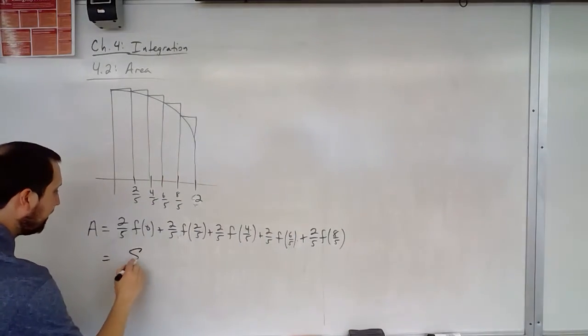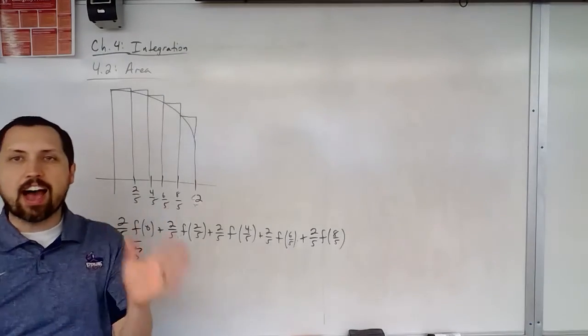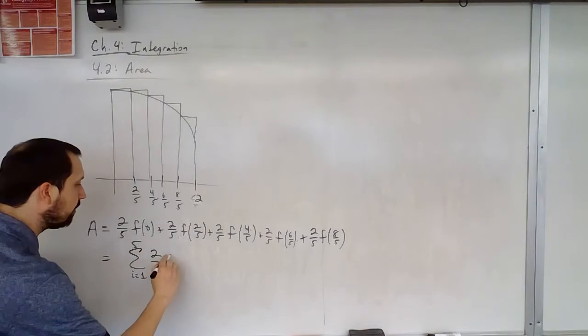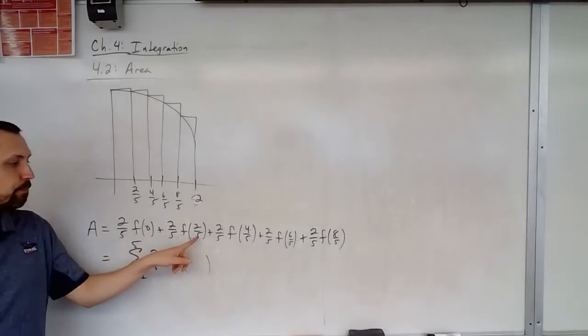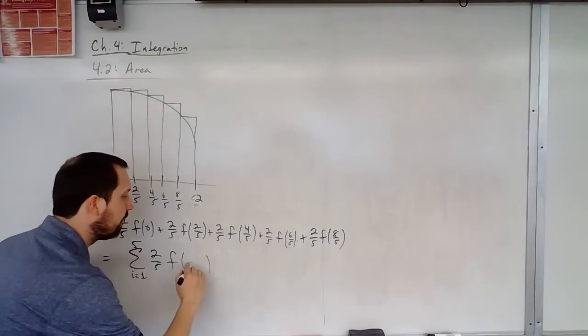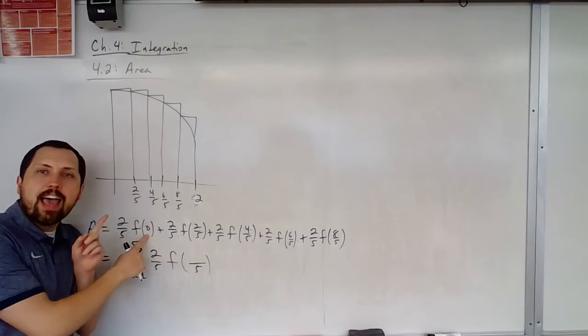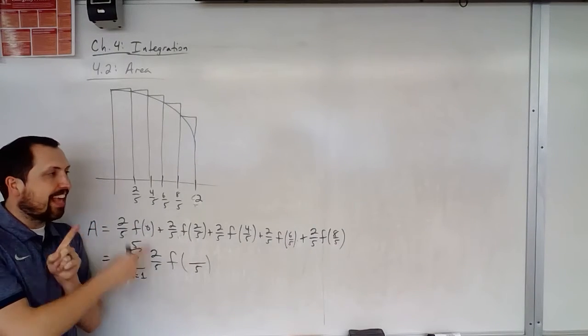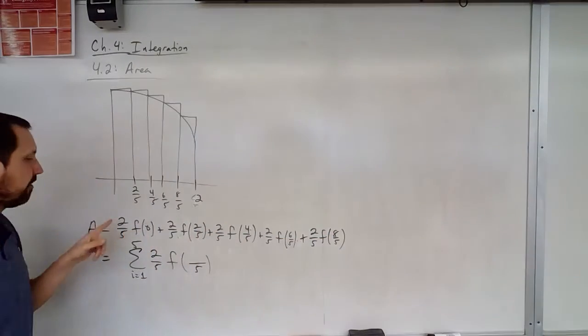So remember, when we looked at this, we said I could start out with i equals one to five. I have these five rectangles. All of these have a two-fifths present, and on the inside, I have five always appears as the denominator, but the goal here is that I have to get zero as my first, but I start with one, and then at the end, I'm trying to get eight up here, and that's going to be when I plug in five.